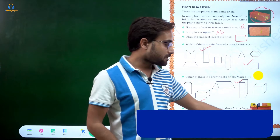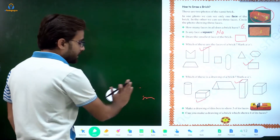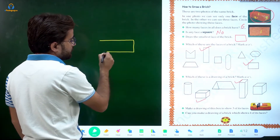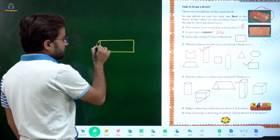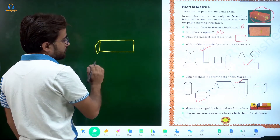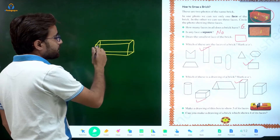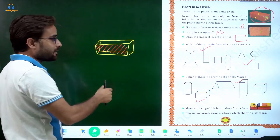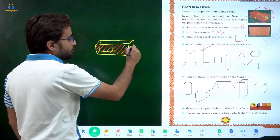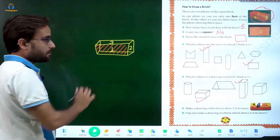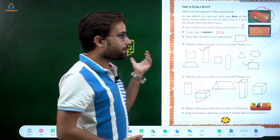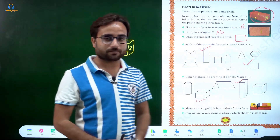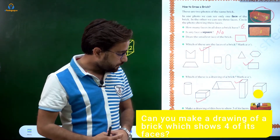Now, make a drawing of this geometry box to show three of its faces. Let me try to make it. When one face is coloured, the back side will not be visible. So you can see face one, two, and three — these three are visible and the back side face is not visible. Like this, showing three faces — this is how a brick drawing will also look, just with a smaller width.